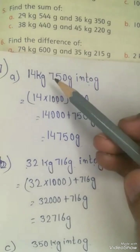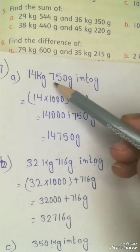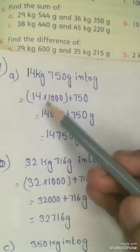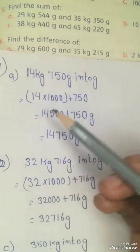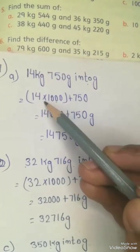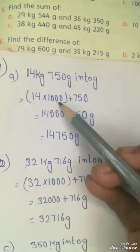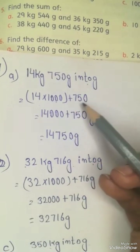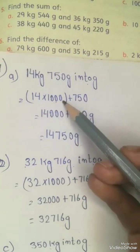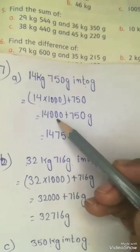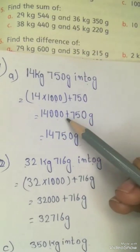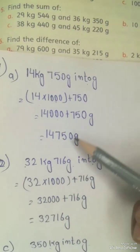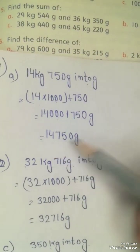So here we have the first question: 14 kg and 750 g into grams. We will write 14 here and multiply it. We are changing into grams, so we multiply with 1000 and then plus the grams value to get the answer.